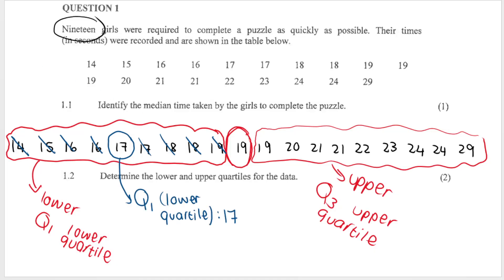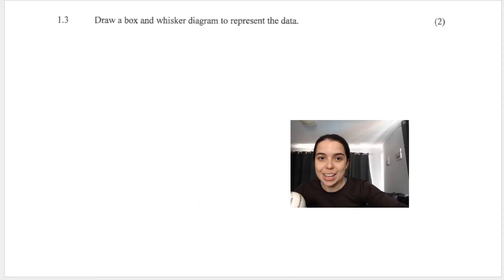Then we do the same for the upper end of the data set, crossing out one by one from each side until we eventually get to 22, which is Q3, the upper quartile.